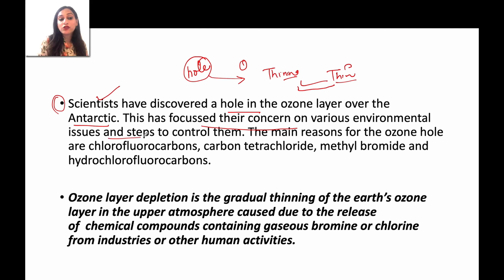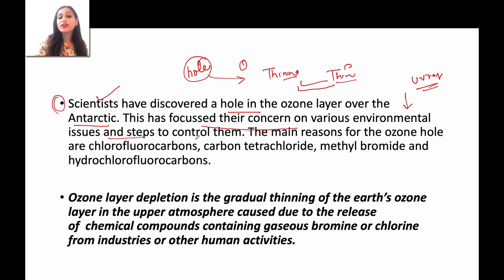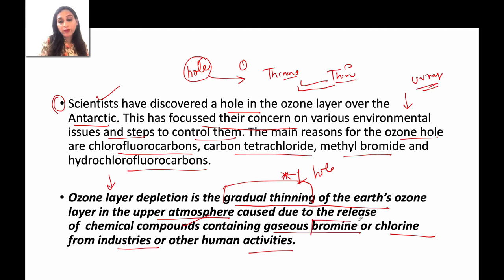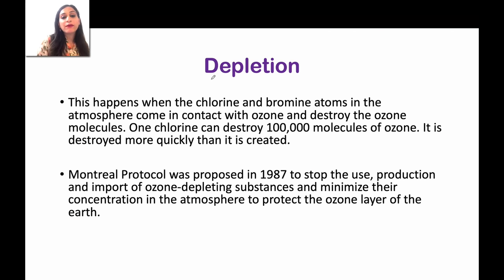This focused on various environmental issues when the Antarctic ozone layer thinning started. Scientists were concerned that UV rays would reach the Earth, so we have to control this. The main reasons are chlorofluorocarbons, carbon tetrachloride, methylbromide, and hydrochlorofluorocarbons. Ozone depletion is the gradual thinning of the ozone layer in the upper atmosphere because chemical compounds are released, especially gaseous bromine and chlorine, from industry and human activities.